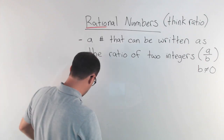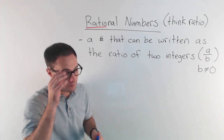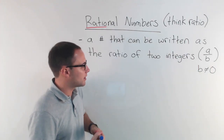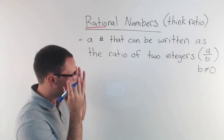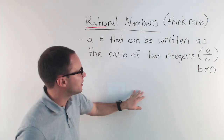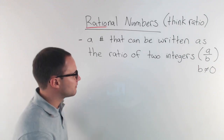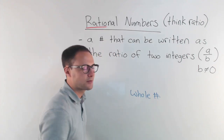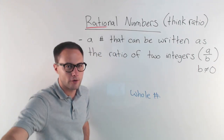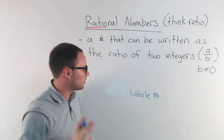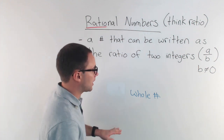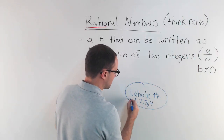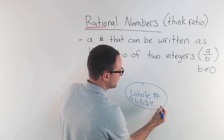You might be getting a little confused mixing integers, rational numbers, and whole numbers, so let's do a quick chart. At the very basic we have whole numbers — that's what you dealt with when you were a little kid: zero, one, two, three, four, five, six, seven, eight... keeps going. No negative numbers, no decimals, just whole numbers.